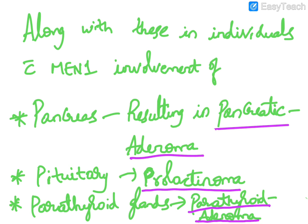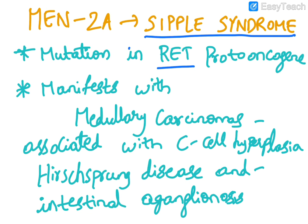MEN1 individuals also manifest with involvement of the pancreas resulting in pancreatic adenoma, involvement of the pituitary resulting in prolactinoma, and involvement of the parathyroid glands resulting in parathyroid adenoma.